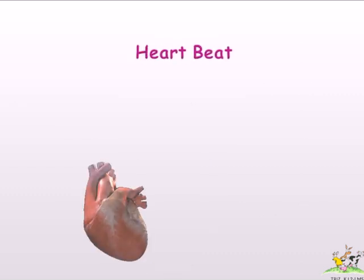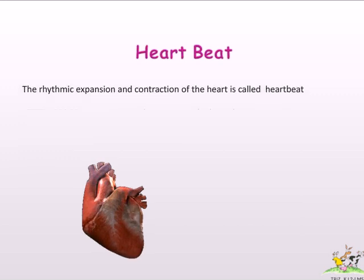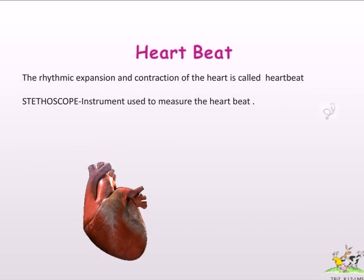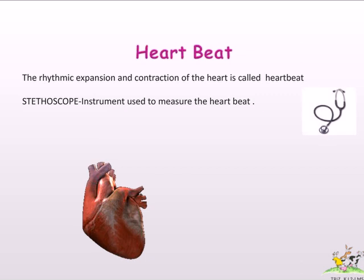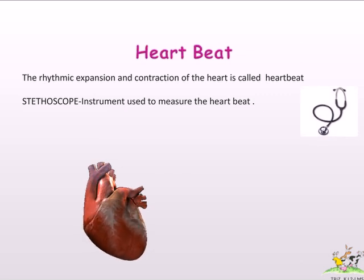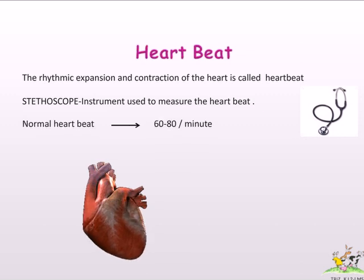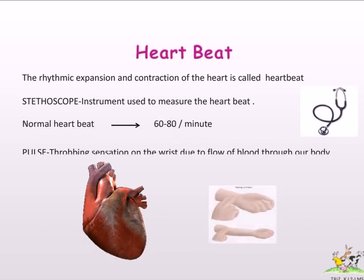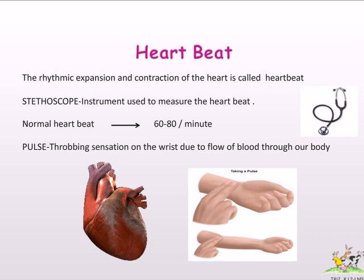The rhythmic expansion and contraction of the heart is called heartbeat. A stethoscope is the instrument used to measure the heartbeat. The normal heartbeat is 60 to 80 per minute. Pulse is the throbbing sensation felt on the wrist due to the flow of blood through our body.